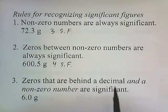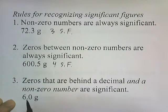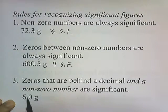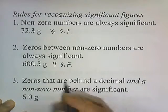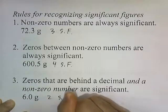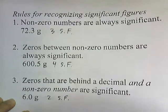Zeros that are behind a decimal and a non-zero number are significant. So this zero is behind a decimal, and it's behind the number six, so this zero counts — two significant figures. The zero has to be behind the dot and behind a regular number to be counted as significant.